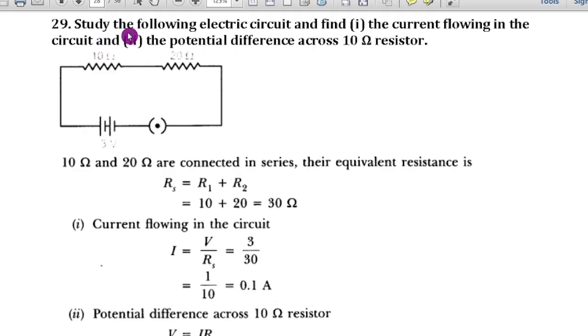Question number 29: Study the following electric circuit and find first the current flowing in the circuit and second, the potential difference across 10 ohm resistor. Here they have given the circuit here, 10 ohm is there and here 20 ohm is there. These two resistors are connected in series and here there is a battery carrying 3 volt. First total resistance: 10 ohm and 20 ohm are connected in series. The equivalent resistance RS equals R1 plus R2, so 10 plus 20 equals 30 ohm.